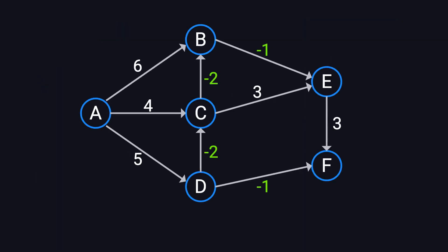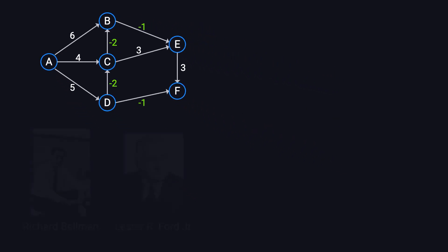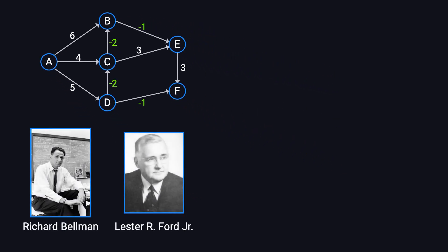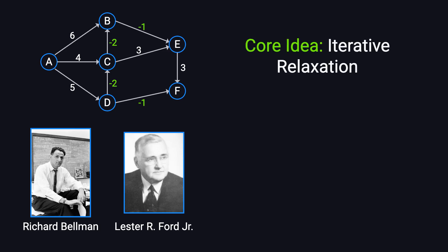So how do we handle graphs with negative edge weights? That's where the Bellman-Ford algorithm comes in. The Bellman-Ford algorithm, introduced by Richard Bellman and Lester R. Ford Jr. in 1958, finds the shortest paths from a single source node. Its core idea is iterative relaxation — repeatedly relaxing all edges until all shortest paths are determined.